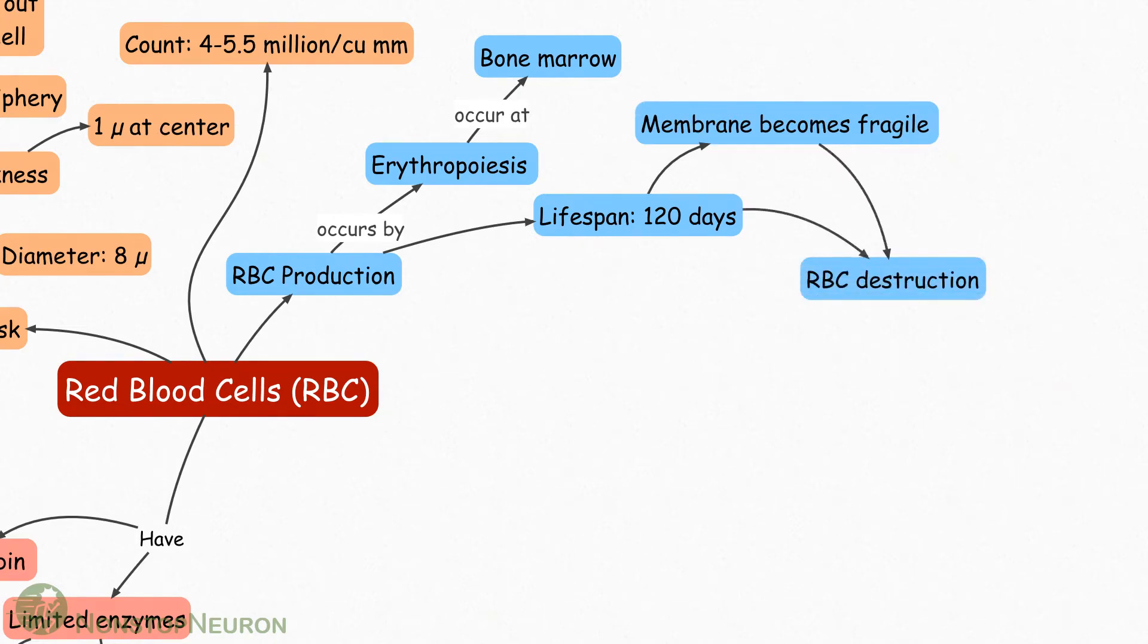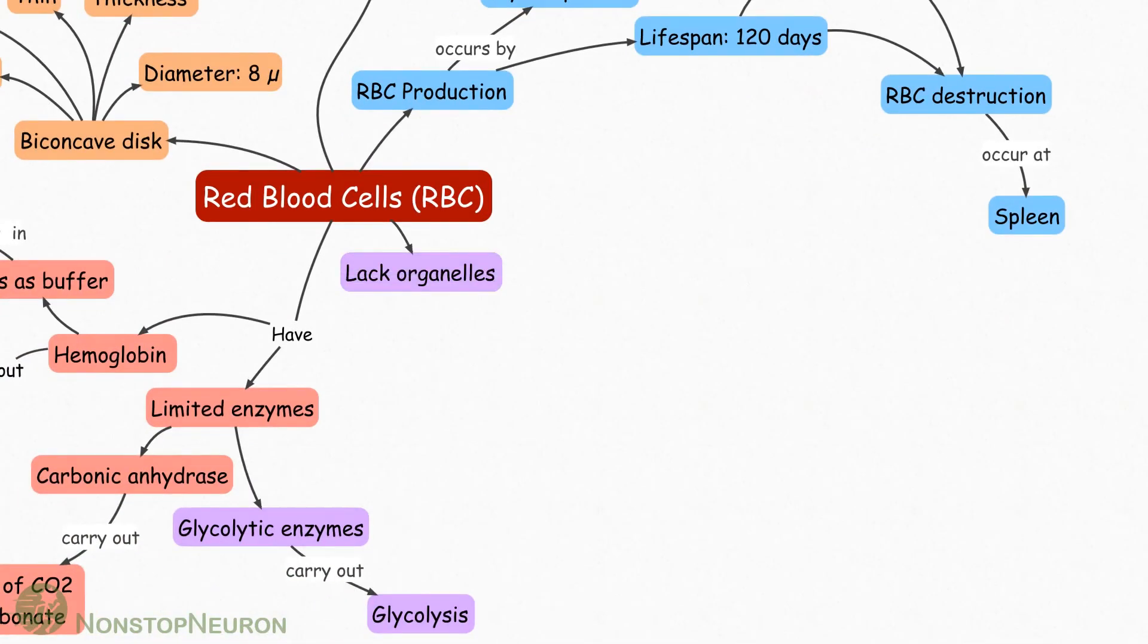So, RBCs undergo destruction which occurs at the spleen. RBCs lack organelles which frees up space in RBC to carry more hemoglobin. This helps RBC in carrying out its function of transporting gases more efficiently.